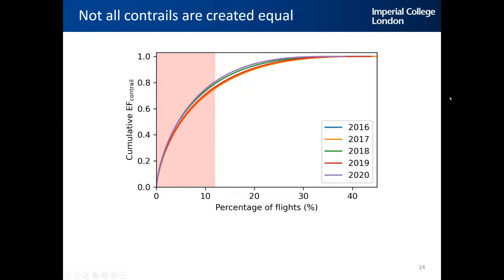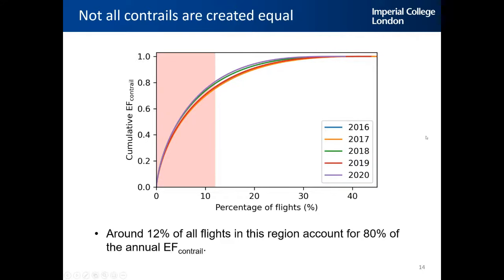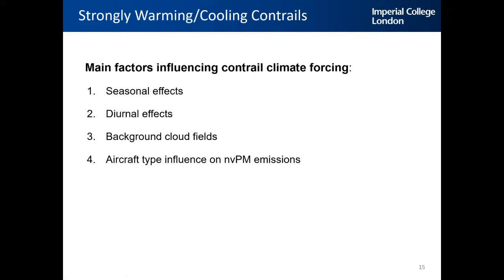Not all contrails are created equal — some can be cooling and others strongly warming. A key finding is that only 12% of all flights in this region account for 80% of the annual contrail energy forcing, consistent across different years. There are four main factors that influence the contrail climate forcing, which we will go through in detail: seasonal effects, diurnal effects, background cloud fields, and aircraft non-volatile particulate matter emissions.